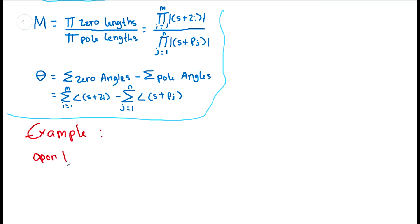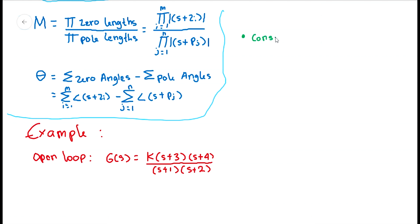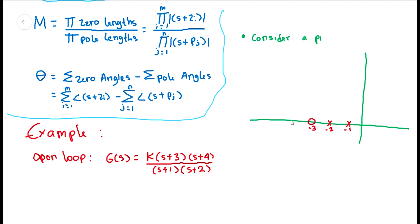Given a unity feedback system with the forward transfer function G(S) equals K times (S+3) times (S+4) divided by (S+1) times (S+2), let us consider an arbitrary point, say minus 2 plus j3. We can draw it on the S-plane. The roots of the system are minus 1, minus 2, minus 3, and minus 4 — where the poles are minus 1 and minus 2, and the zeros are minus 3 and minus 4.